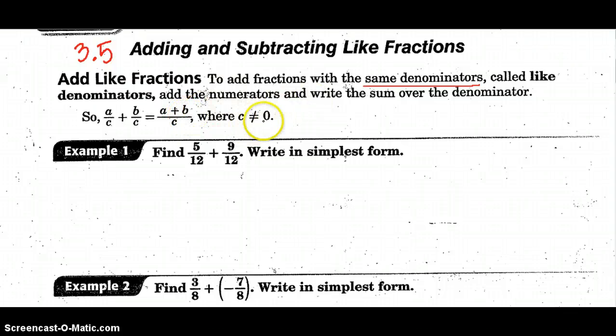Now remember, C cannot be zero. We've talked about that before. If you try to build a house and it has no foundation, it will not exist. You can have zero in the numerator, but you can't have zero for your denominator.